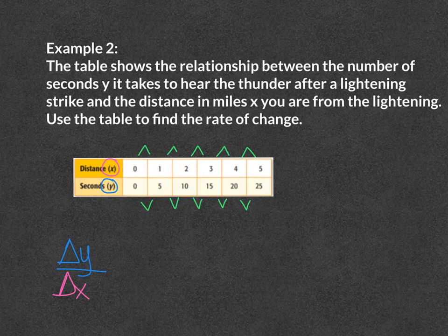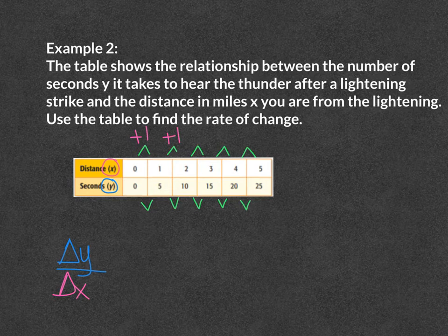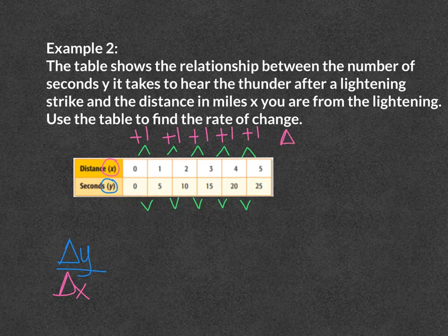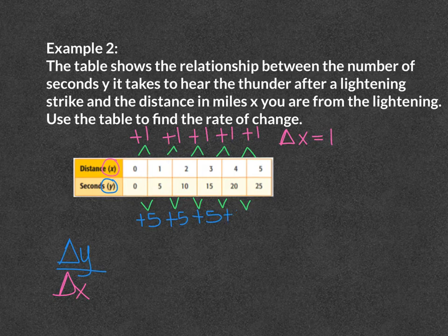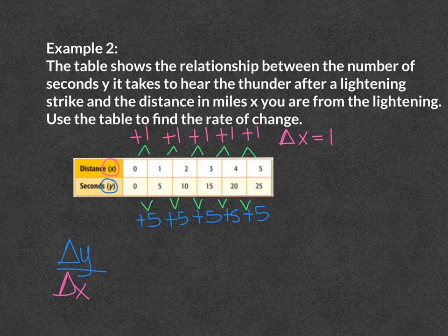Starting with our x values: from 0 to 1 I am adding 1, from 1 to 2 adding 1, from 2 to 3 adding 1, from 3 to 4 adding 1, from 4 to 5 adding 1. So the change in x equals 1. Now my y values: from 0 to 5 I am adding 5, from 5 to 10 adding 5, from 10 to 15 adding 5, from 15 to 20 adding 5, and from 20 to 25 adding 5. So my change in y equals 5.